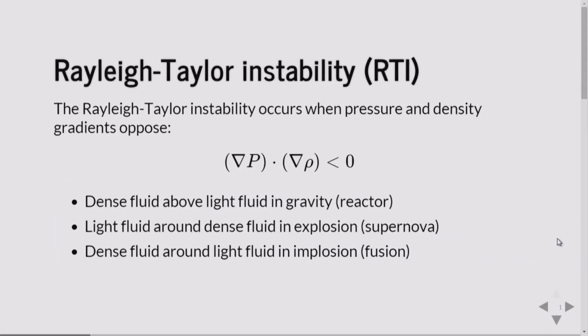The Rayleigh-Taylor instability is a primary fluid instability. It occurs whenever the pressure and the density gradients are in opposition to each other. The canonical case is when you have a dense fluid on top of a light fluid in a gravitational field. If the initial interface was perfectly flat, the light fluid would, through pressure, actually be able to support the dense fluid, but obviously that's never the case.